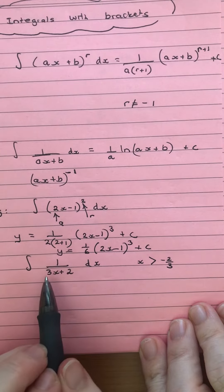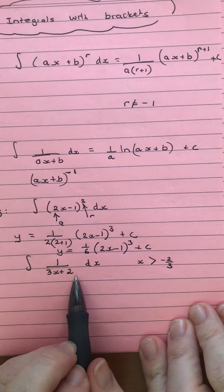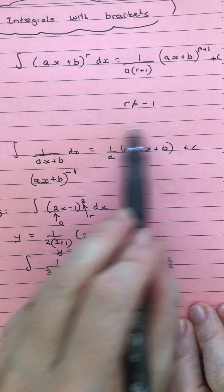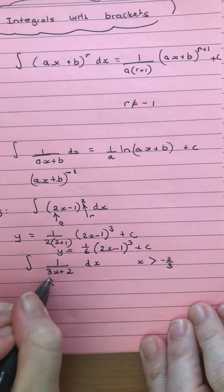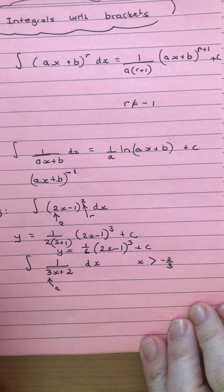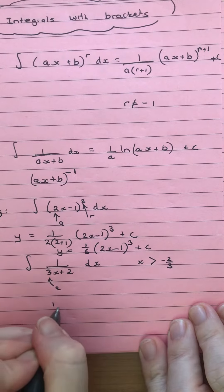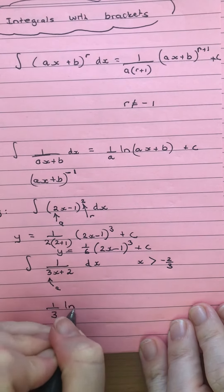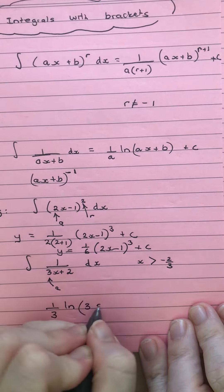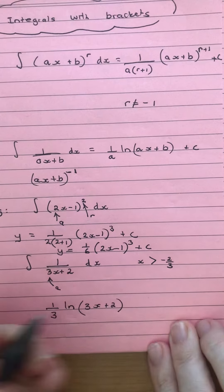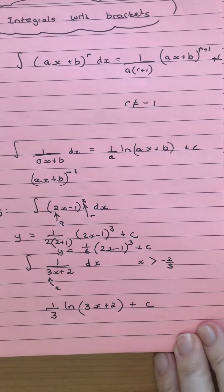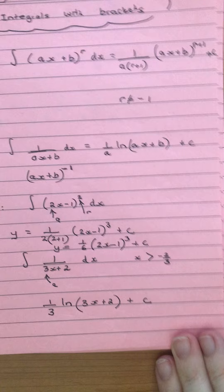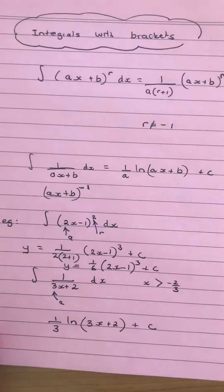Here we've got our form where it's to the negative 1, so we're going to use our ln rule. Our a is 3, so that means our answer is 1 over 3 times ln(3x+2) plus c. So just using those two rules.